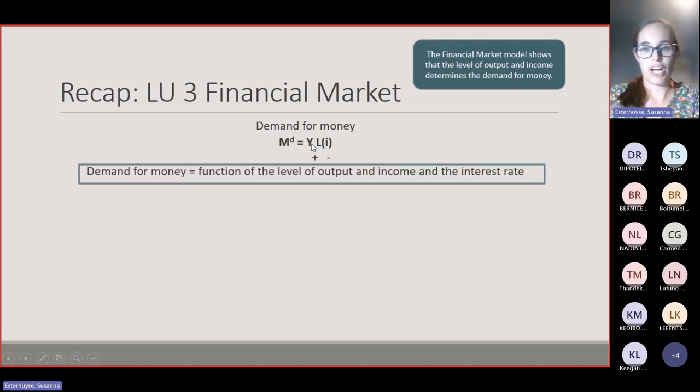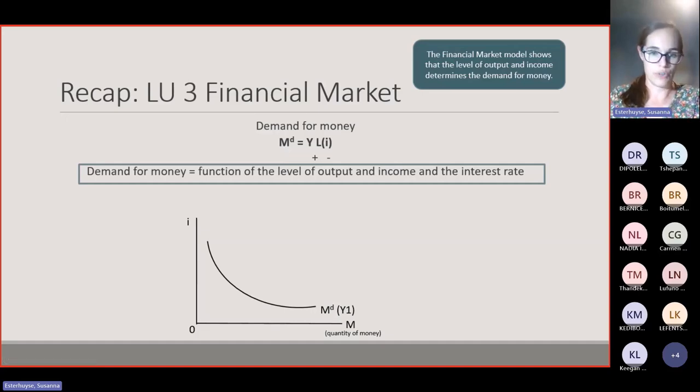You learned about the demand for money equation: M^d = Y L(i). There's a positive correlation—as output and income increase, demand for money increases because you're able to do more transactions. There's a negative relationship between interest rate and demand for money. As interest rate increases, willingness to save increases and willingness to keep money in liquid form decreases, so demand for money goes down.